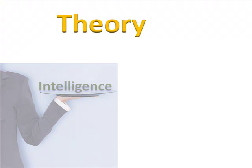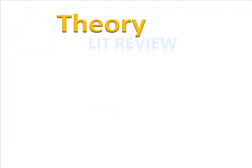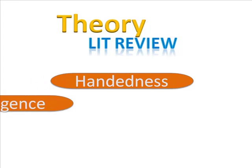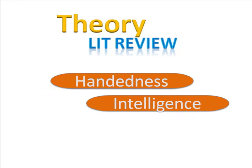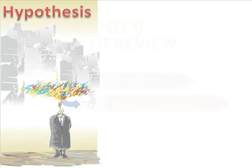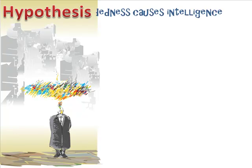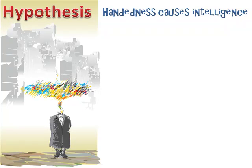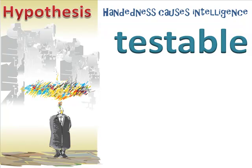Our theory and lit review has guided us to include two variables in our model, and the direction of the hypothesized causality is that handedness causes intelligence. This statement of predicted causality is our hypothesis. We started with a theory, did a lit review, and selected two variables. And now we have a hypothesis.